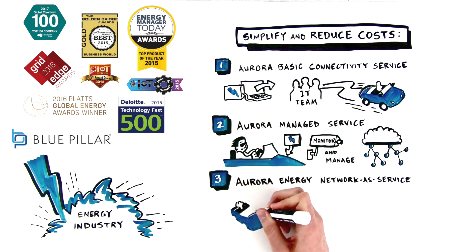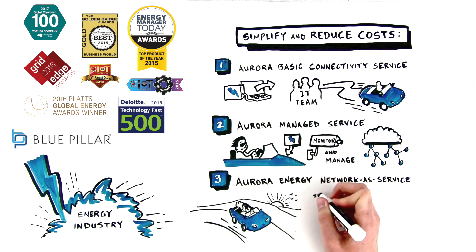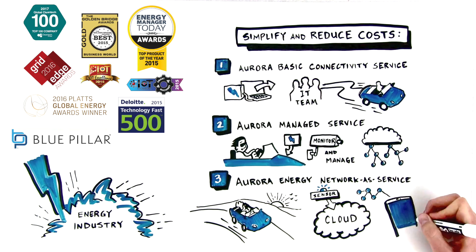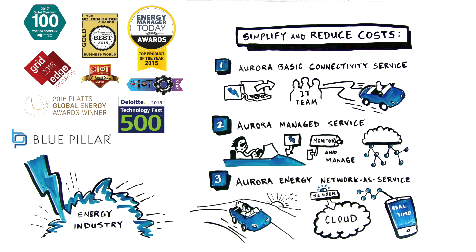Our third option, Energy Network as a Service, is our version of Uber. Just tell us where you want to go and we'll drive a turnkey, no-touch, proactively monitored, sensor-to-cloud Aurora Energy IoT network while you enjoy real-time data and control without ever setting foot behind the meter.